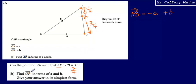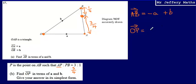Bearing that in mind, let's tackle part B — we're asked to find the vector OP. I'm going to go from O to A first, and then from A to P. So the vector OP equals the vector OA plus the vector AP.